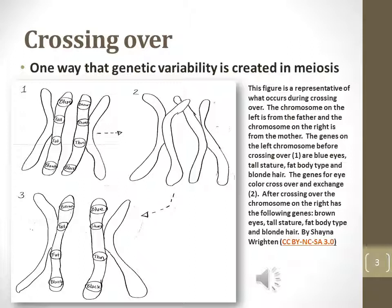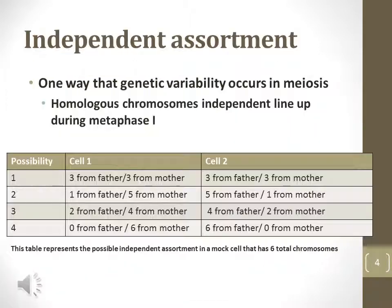Entire sections of DNA are exchanged between the two, recombining the chromosomes from each parent. This figure is a representative of what occurs during crossing over. The chromosome on the left is from the father and the chromosome on the right is from the mother.